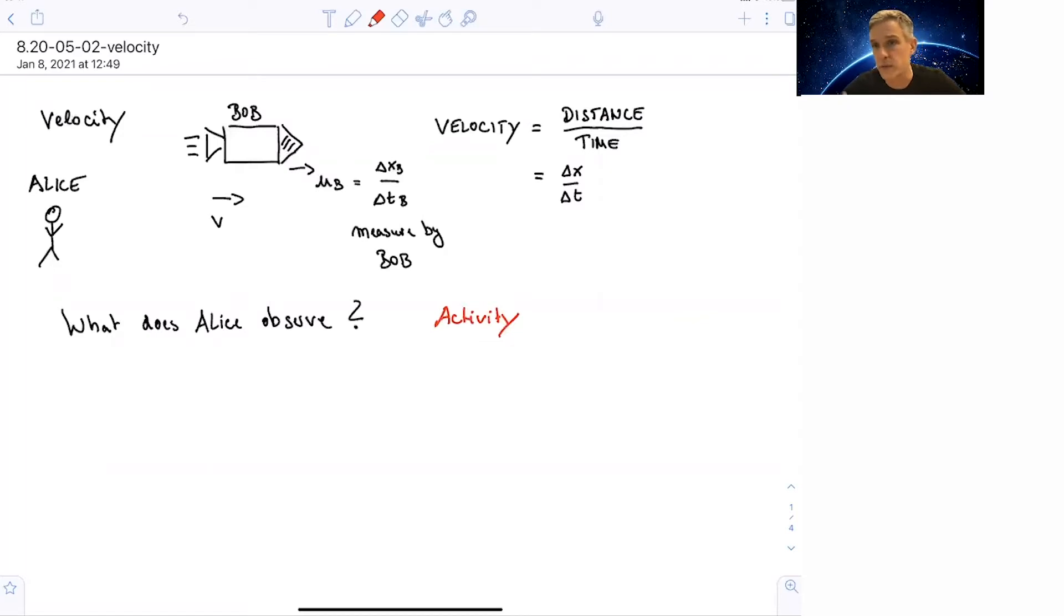In this specific case, the velocity of this escape rocket is uB, delta xB over delta tB, as measured in Bob's reference frame. The direction of this velocity is the same as the direction of Bob's spacecraft in the longitudinal direction. As a reminder, velocity is distance over time, or delta x over delta t. So the question now is, what does Alice observe?